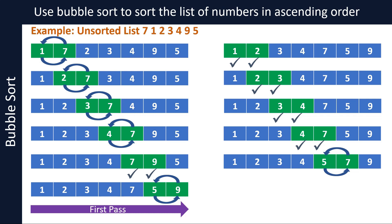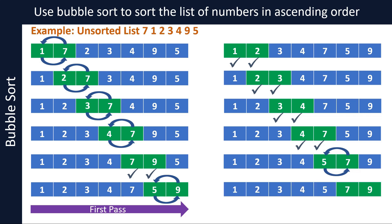The list now becomes 1, 2, 3, 4, 5, 7, and 9. Take the last two items in the list — since 7 and 9 are in the correct order, no swap needed. We have now completed the second pass. As you can see on your screen, the list is now sorted — all items are in the correct order from smallest to largest. But the algorithm makes one more pass through the list to check that no more swaps are required.